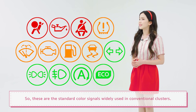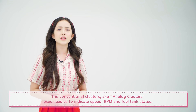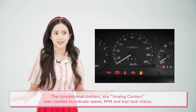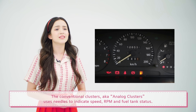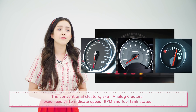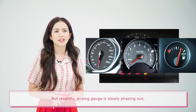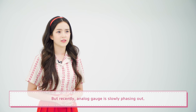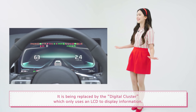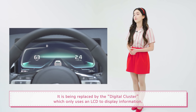So these are the standard color signals widely used in conventional clusters. The conventional clusters, aka analog clusters, use needles to indicate speed, RPM, and fuel tank status. But recently, analog gauges are slowly phasing out. They are being replaced by the digital cluster, which only uses an LCD to display information.